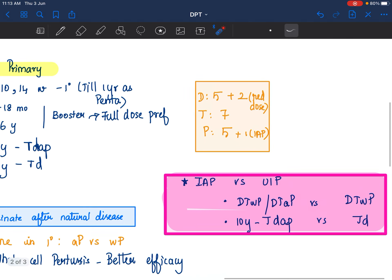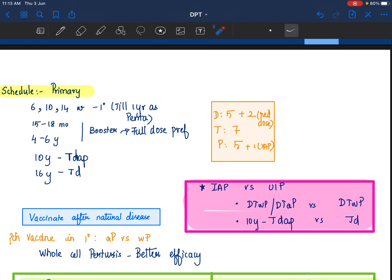The difference between IAP and UIP comes here. IAP preferably whole cell pertussis vaccine. Acellular pertussis may be given. But IAP position is that whole cell vaccine is preferred for primary and secondary boosters also.